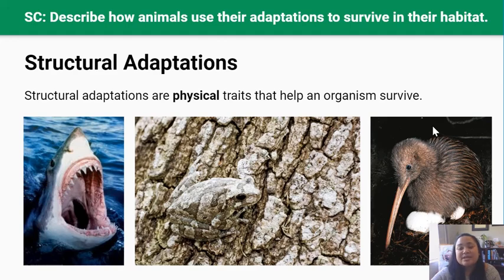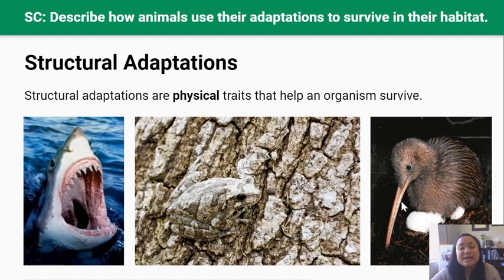In this picture there is a kiwi, and a structural adaptation of the kiwi is its long beak. At the end of its long beak are nostrils. The kiwi uses its beak and nostrils to dig deep into the soil, and its nostrils are able to sniff out earthworms deep in the soil.